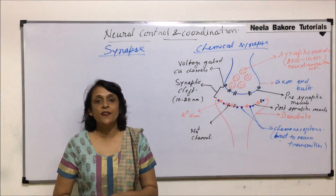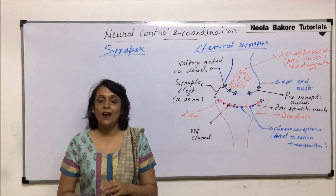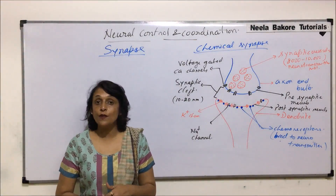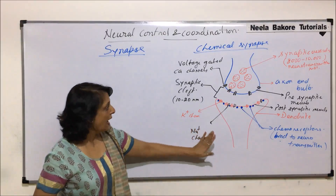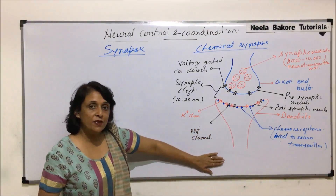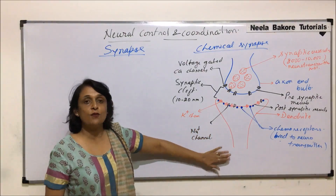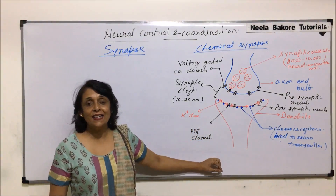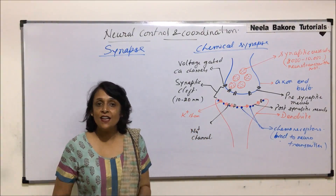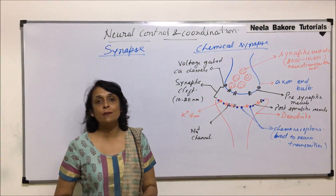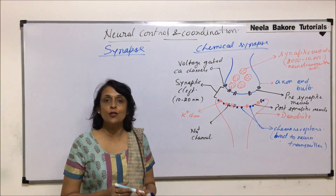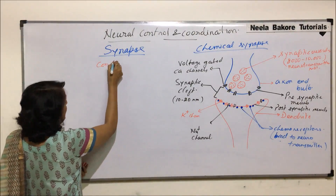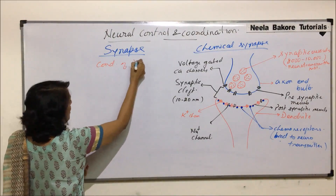In the previous part, we understood the structure of a chemical synapse and the diagram is still here. We are going to use the same diagram to understand the conduction of impulse through this chemical synapse.